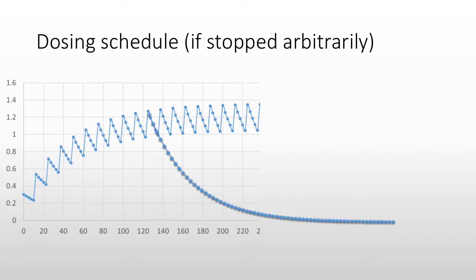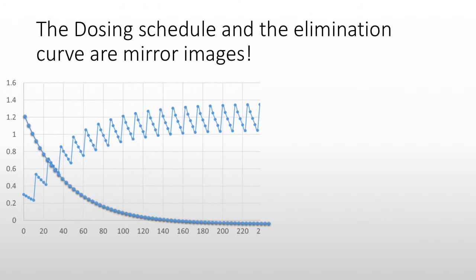If I give doses and then give this last dose right here, and then forget to give any more, the concentration is going to start eliminating — just following first order elimination, as it always has. Look at what you notice about these two curves: they're like mirror images of each other. I'm going to talk about what the implications of that are.